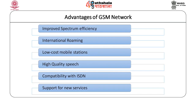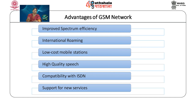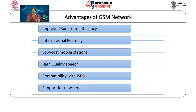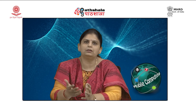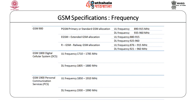Let us look at the advantages of the GSM network. The improved spectrum efficiency is achieved through the cellular system on which GSM is based, which facilitates frequency reuse by repeating the frequency for cells far away from each other. It provides international roaming across more than 210 countries worldwide. GSM mobile stations are low-cost, offer high quality speech, and importantly are compatible with fixed networks — PSTN and ISDN — and support new services.